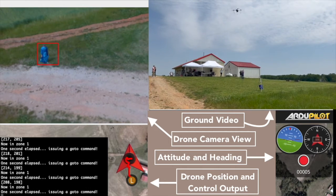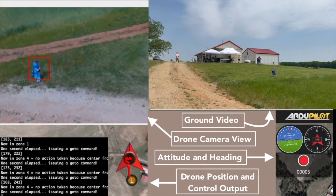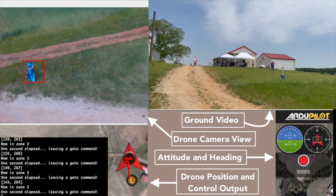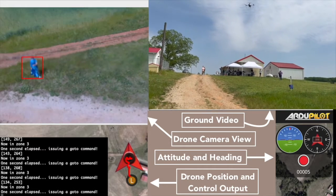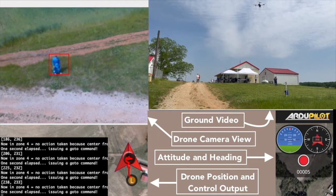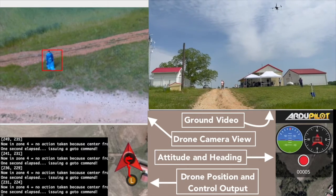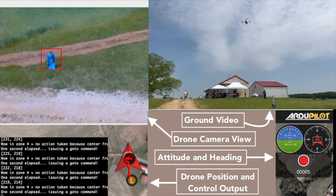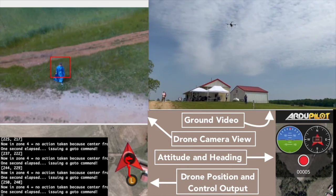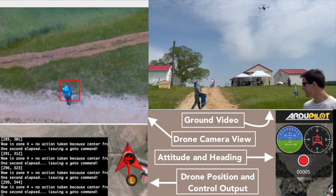Another big roadblock was that our first approach worked very well in the simulated environment, but once we tested it out in the field, even a slight breeze made it completely unusable and it drifted downwind away from the object as soon as it started to try to track it. This was very disheartening, but thankfully we persevered to create a fully functional demo by the end of the class.